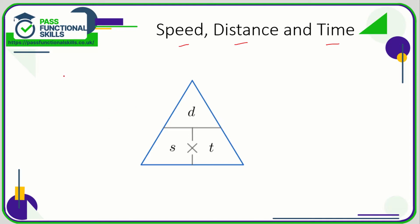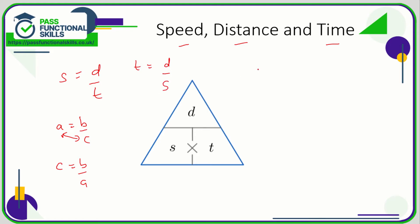I normally teach people to remember that speed is distance divided by time. Whenever you've got a formula where A equals B divided by C, the A and the C can be flipped around — so C equals B divided by A. So speed is distance over time, and time is distance divided by speed. We can apply that to density as well — density is mass over volume, so therefore volume equals mass over density.